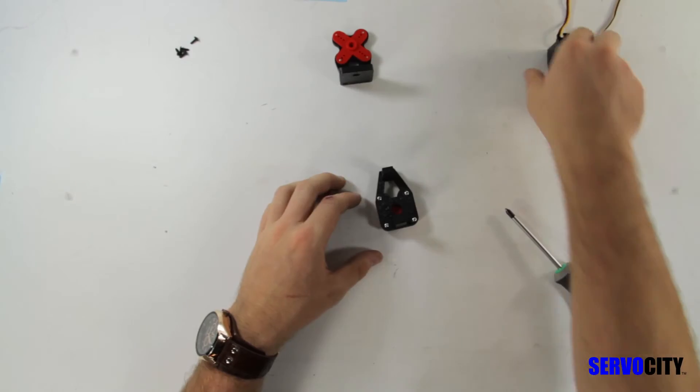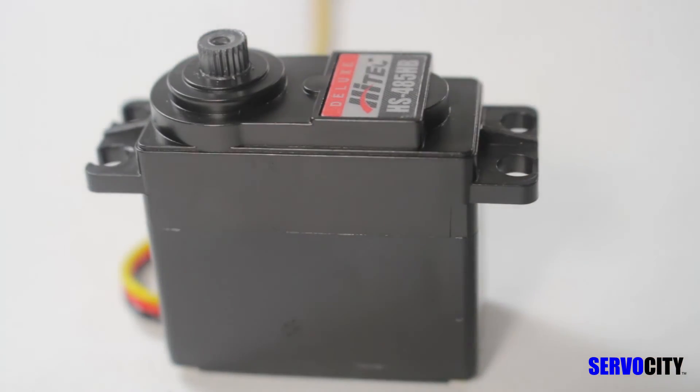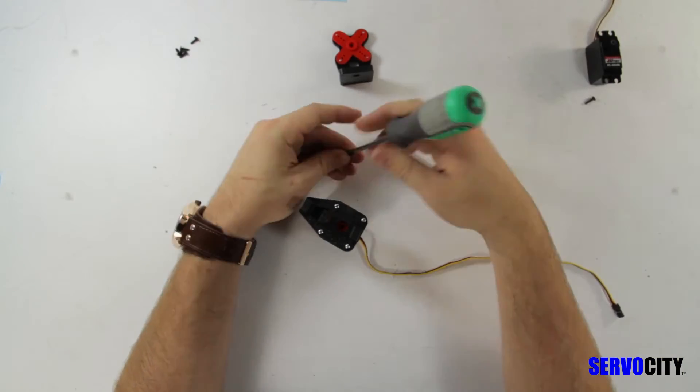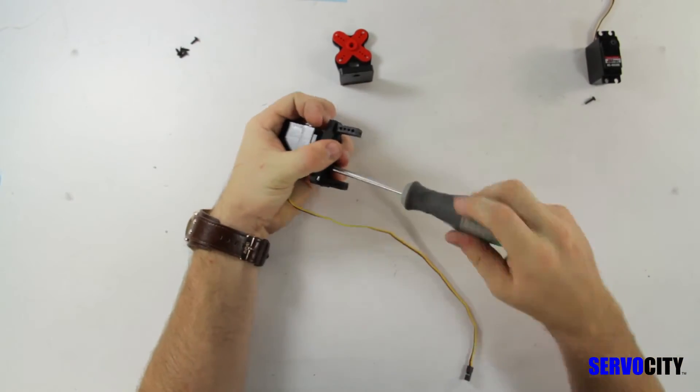For this video we are using Hitek's 485HB servo. You attach that to the output shaft of the servo that has the servo mounts on it.